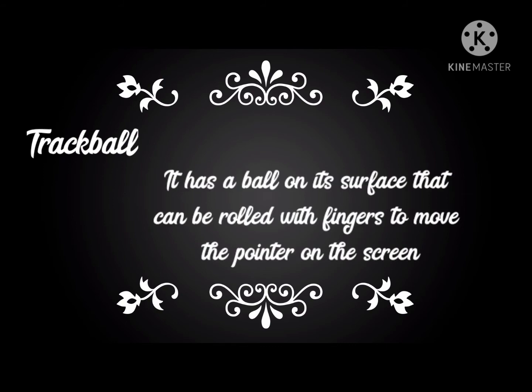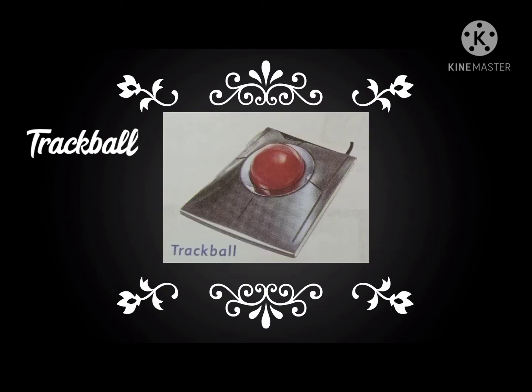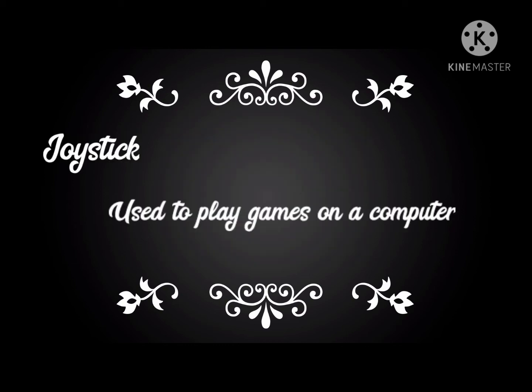Next is the trackball. The trackball is similar to the mouse. It has a ball on its surface that can be rolled with fingers to move the pointer on the screen. As you can see in the picture, there is a ball on top that you move with your fingers.